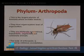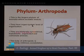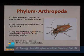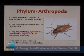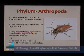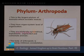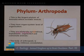Arthropods have organ system level of organization, bilateral symmetry, and are triploblastic, segmented and coelomate animals. In Arthropods, the coelom is a haemocoel — a coelom filled with blood or haemolymph. The body is also covered by a chitinous exoskeleton, which is a very important feature of phylum Arthropoda.